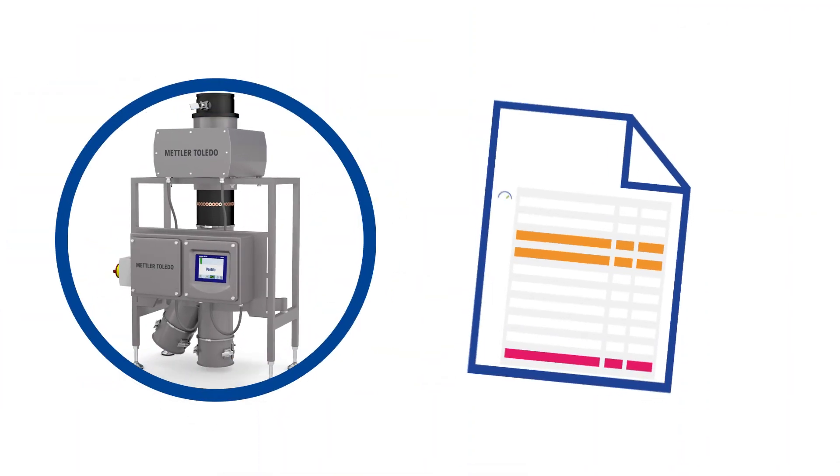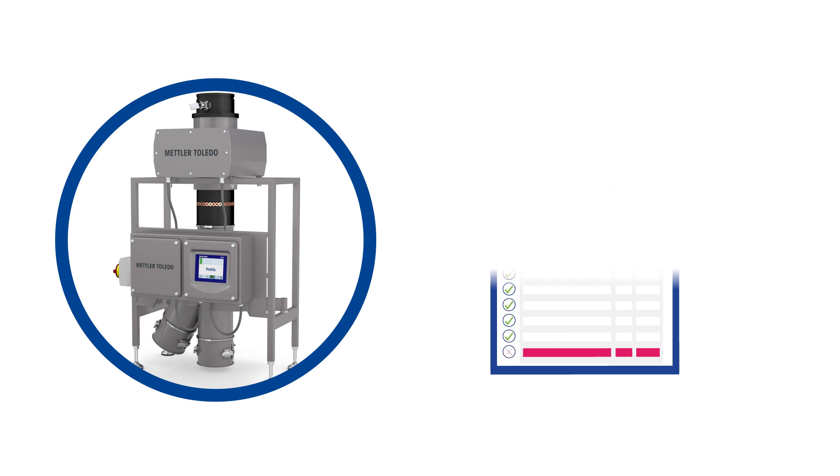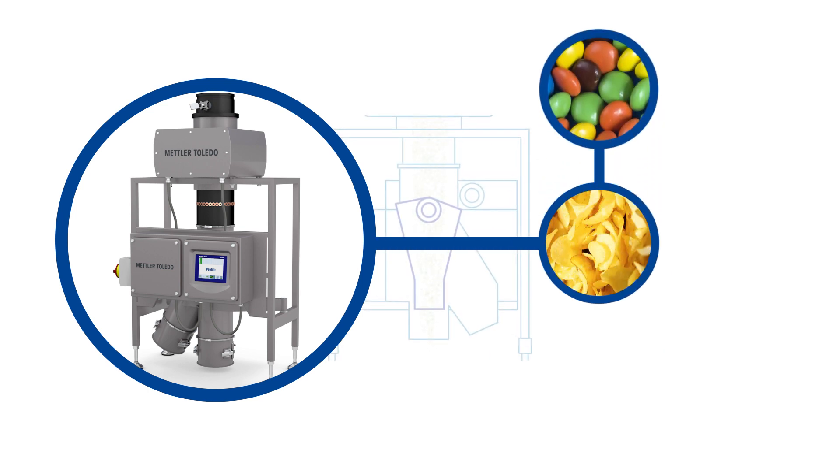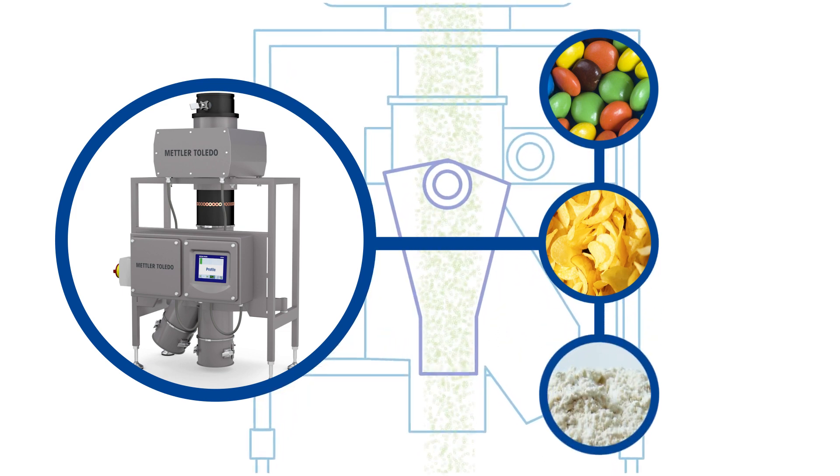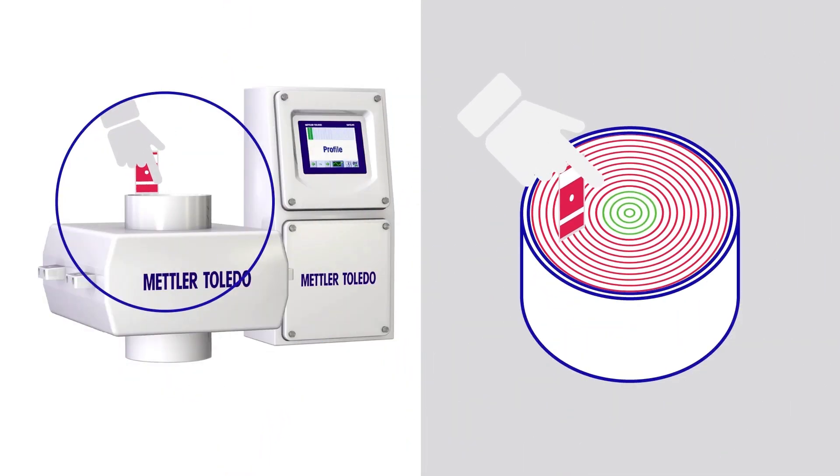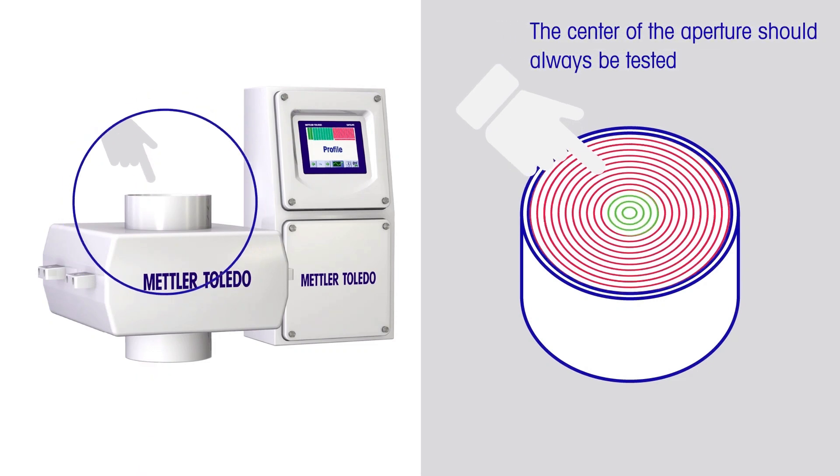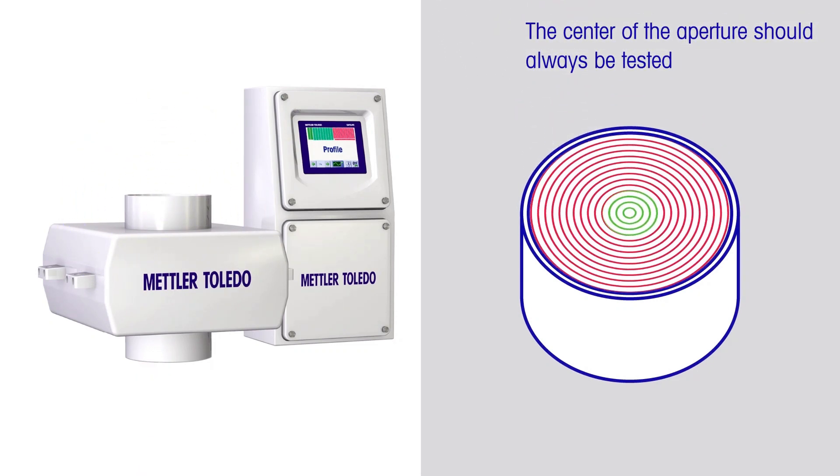Ensuring accurate results can be particularly challenging when testing vertical metal detectors used in snack food and confectionery applications, and gravity-fed applications such as powder processing. We know test pieces are often dropped down the metal detector's aperture, delivering random and unreliable results.